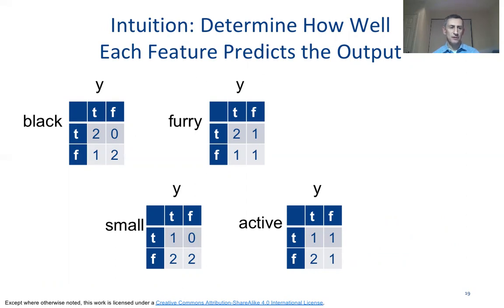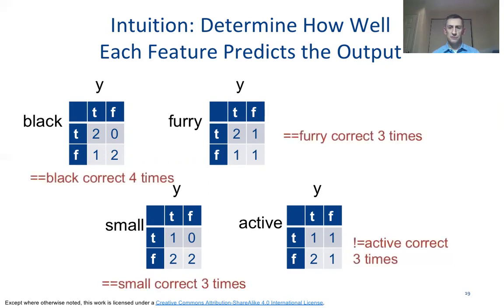So if you look specifically at the leftmost corner with association of black with y, we see that the black feature correctly predicts y four out of five times. What about the other ones? The other features basically at most predict the y variable three times correctly. So based on this limited analysis we could conclude that maybe black is the best feature to predict our output variable y.